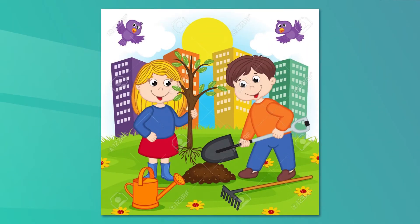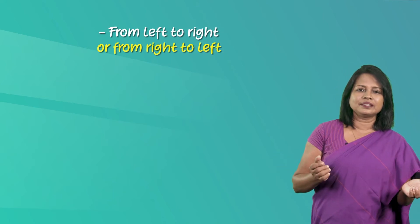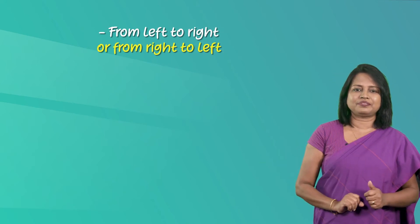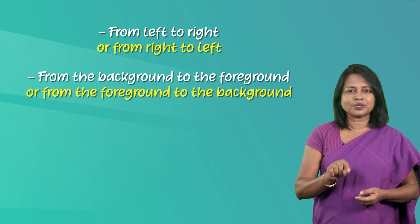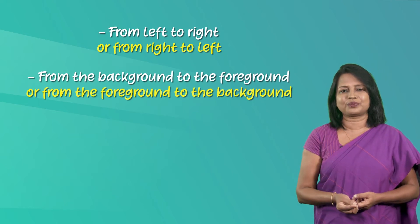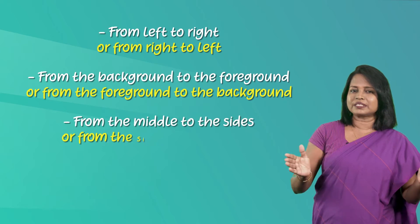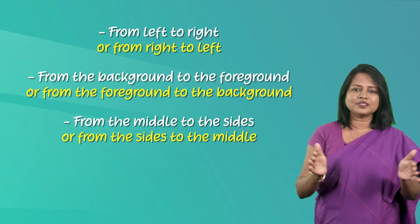Now let's practice this with an activity. You have to study this picture and then list down the objects, animals and people you can see. When you are studying the picture, make sure you take in all the details. You can do it this way: from left to right or from right to left, from the background to the foreground or from the foreground to the background, from the middle to the sides or from the sides to the middle.